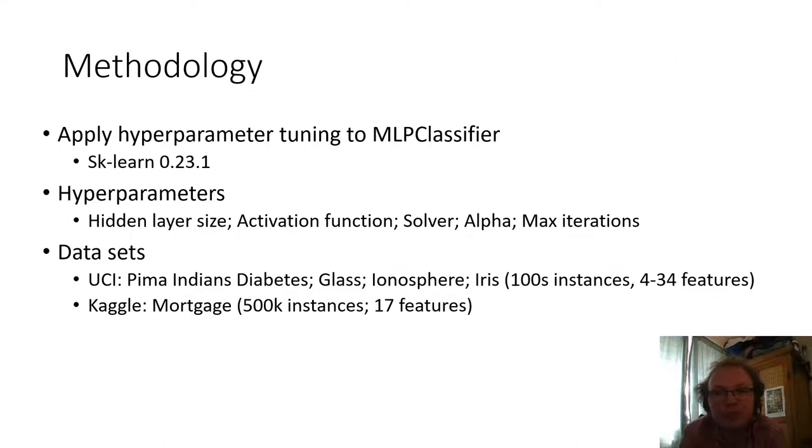The approach that we took was fairly straightforward. We're using the MLP classifier in scikit-learn and applying hyperparameter tuning to it for the hyperparameters that I've listed there, a mixture of structural ones, things like hidden layer size and the activation function that's being used in the neurons, as well as non-structural things like the solver, the training algorithm that's being used to fit the model. And we applied it to a mixture of UCI data sets, common benchmarks, and a much larger data set, this mortgage data set from Kaggle.